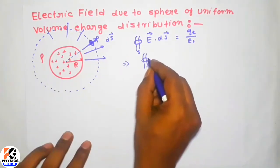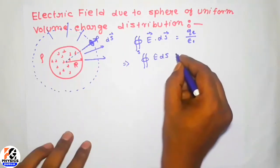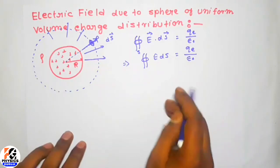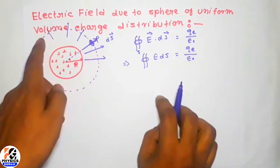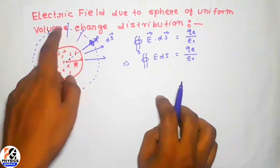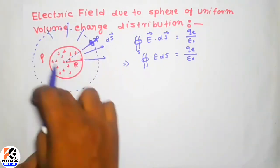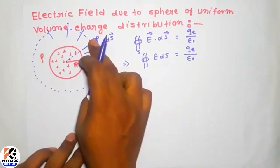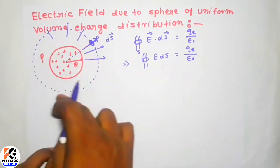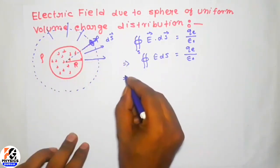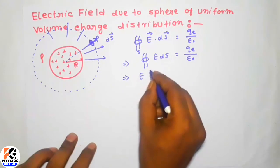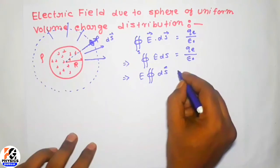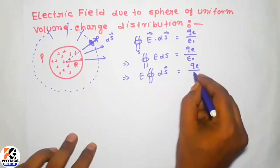Therefore it becomes E times dS times cos 0 degrees, and cos 0 degrees equals 1. So E times dS equals Q_e over epsilon-zero. Every point on the Gaussian surface has spherical symmetry, so the magnitude of the electric field on the Gaussian surface is the same. Therefore E can be taken as constant and brought outside the integration, giving E times the integral of dS equals Q_e over epsilon-zero.